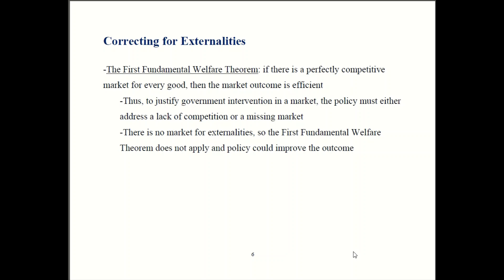Now we come to a very important result: the First Fundamental Welfare Theorem. It states that if there's a perfectly competitive market for every good, then the market outcome is efficient. We discussed perfect competition back in Chapter 3. With perfect competition, firms had no ability to set prices — no market power — and had to take the prevailing market price as given because each firm was too small to influence it. So if every good has a perfectly competitive market, the market outcome is efficient. This is the big justification for free market economics.